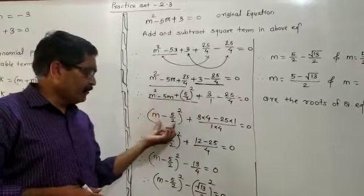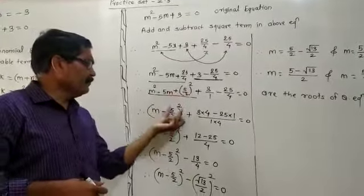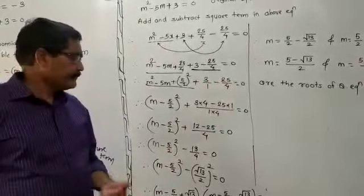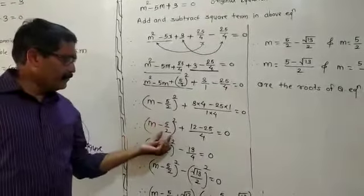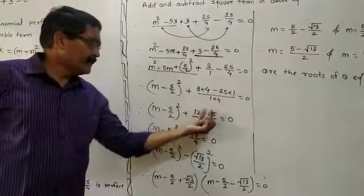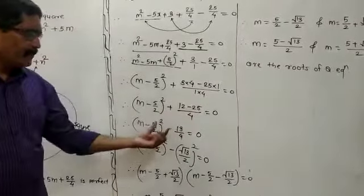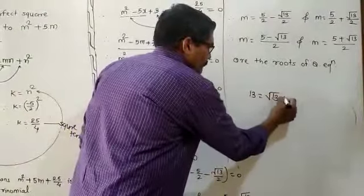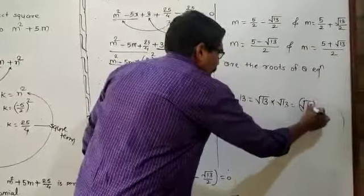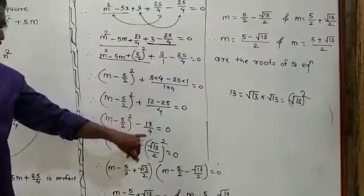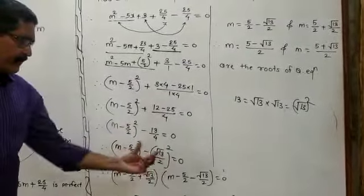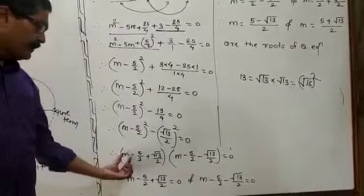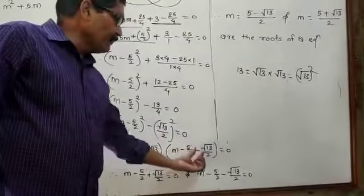You have to write the first three terms in the form of a square. Write the first term as m minus 5 upon 2, bracket squared. Then 3 multiplied by 4 minus 25, multiplied by 1, divided by 1 multiplied by 4, equals 0. So m minus 5 upon 2, bracket squared: 4 times 3 is 12, minus 25, equals minus 13 upon 4. You have to write this term in the form of a square: 13 equals square root of 13 multiplied by square root of 13, equals square root of 13 squared. So write it as square root of 13 upon 2, bracket squared, equals 0. Then write this in the form of A squared minus B squared: in one bracket A plus B and in another bracket A minus B. This gives m minus 5 upon 2 plus square root of 13 upon 2, times m minus 5 upon 2 minus square root of 13 upon 2.